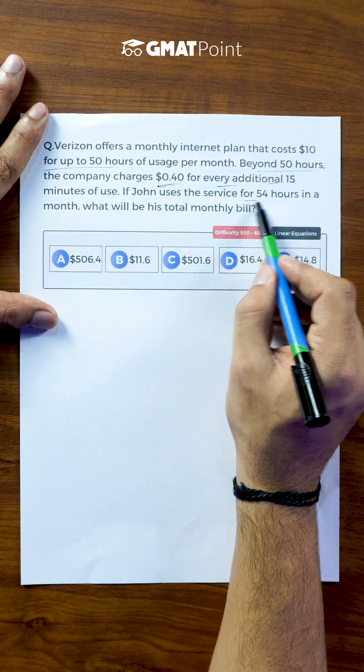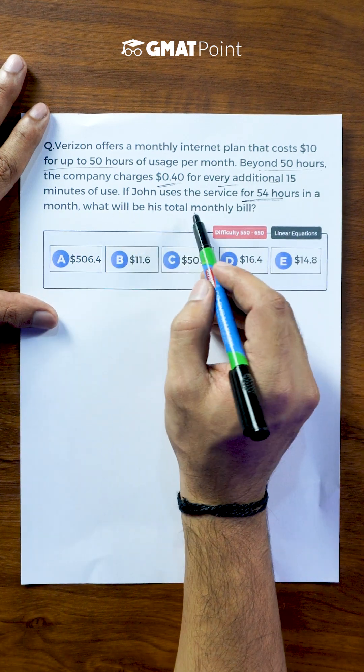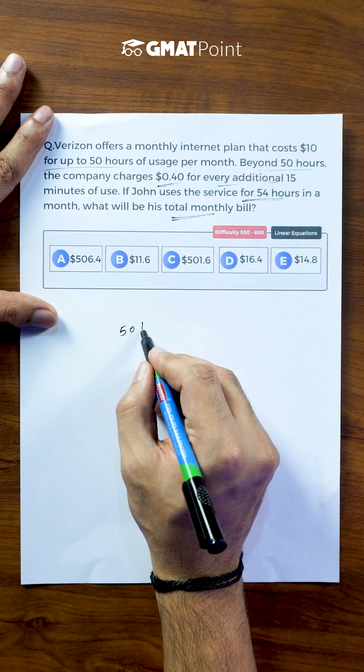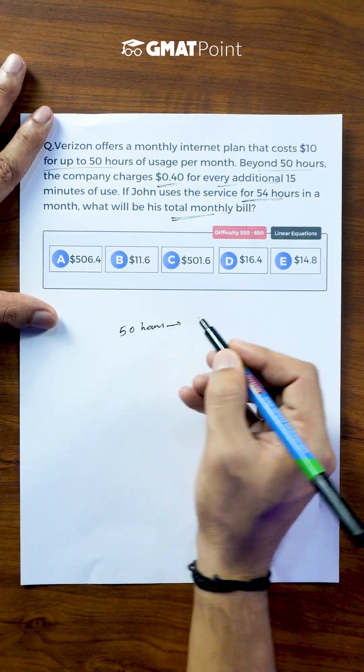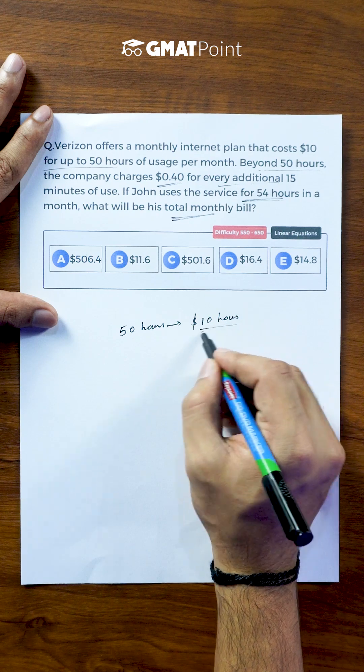If John uses the service for 54 hours in a month, what will be his total monthly bill? We are told that for the first 50 hours of usage, the cost would be fixed, which is $10.